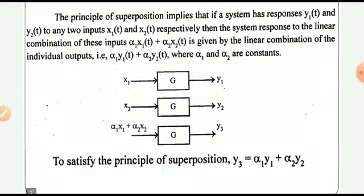Suppose we have a system with transfer function G. For an input x1 the output is y1, and for an input x2 the output is y2. If the input is multiplied with a constant alpha1, that is alpha1 into x1, and the output is alpha1 into y1, similarly if the input is alpha2 into x2 the output is alpha2 into y2.